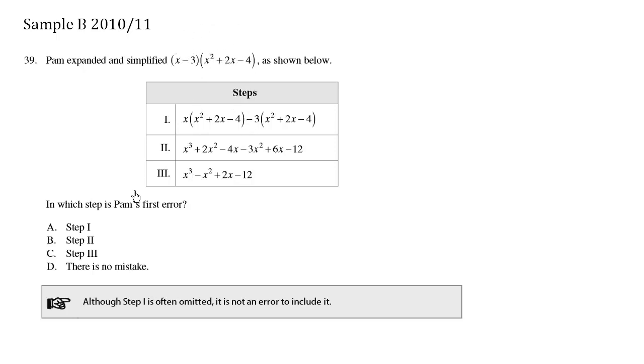So the note here is although step one is often omitted, it is not an error to include it. So this here is technically correct. Some people just tend to skip the brackets and expand it out one by one using distribution.